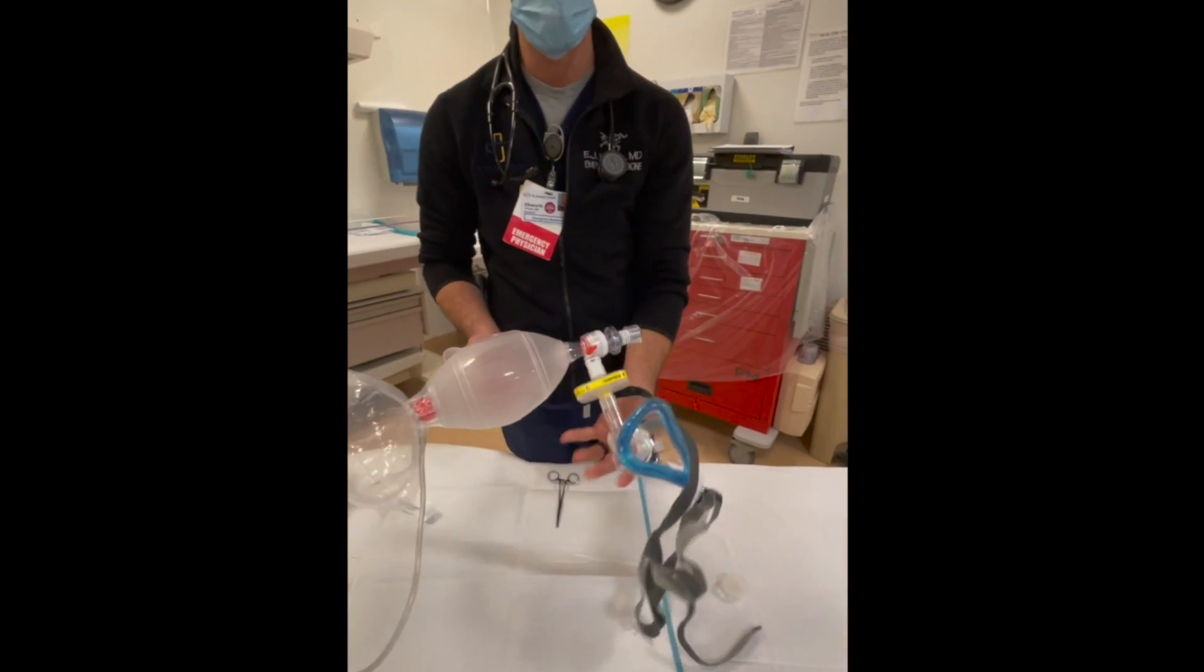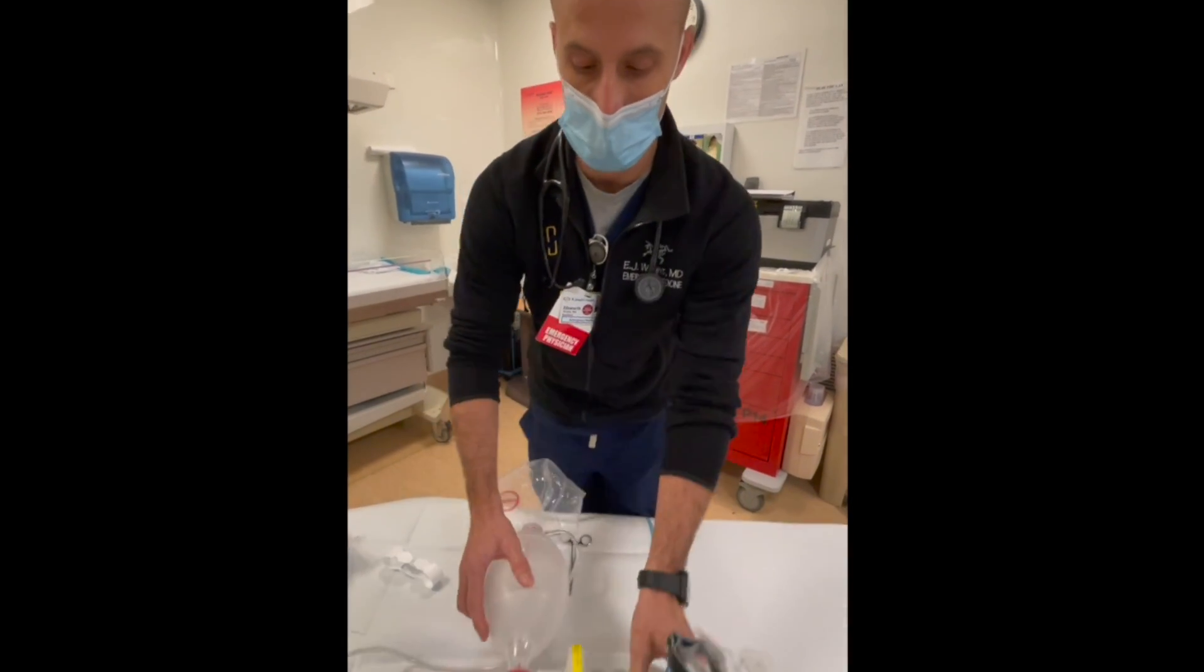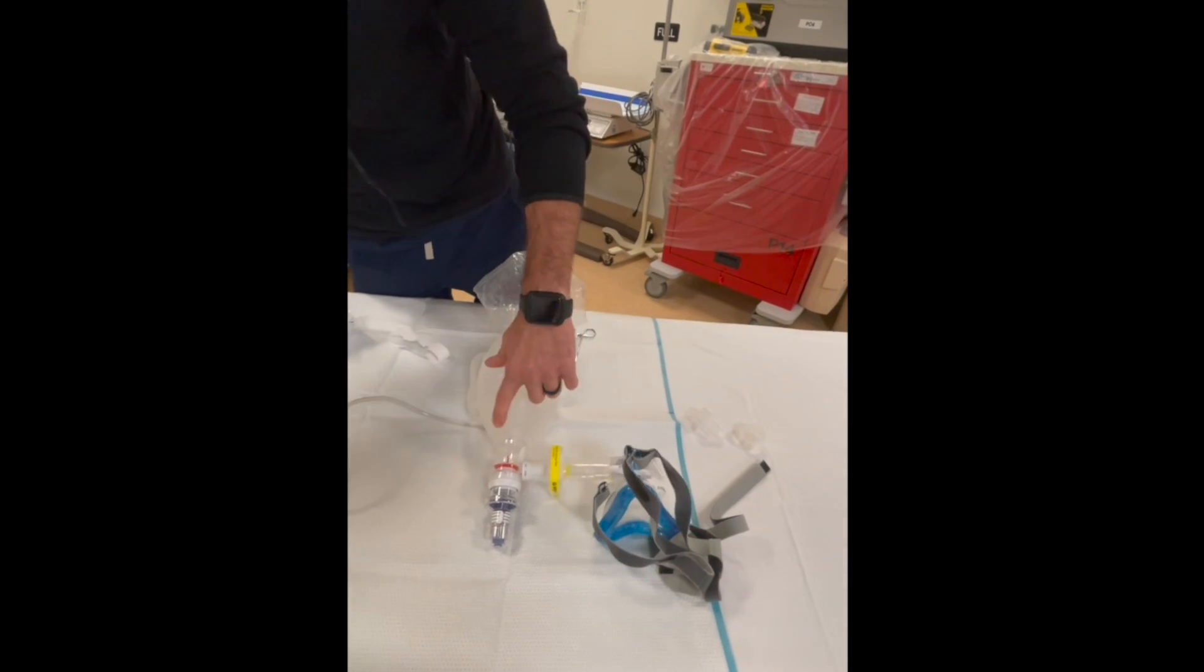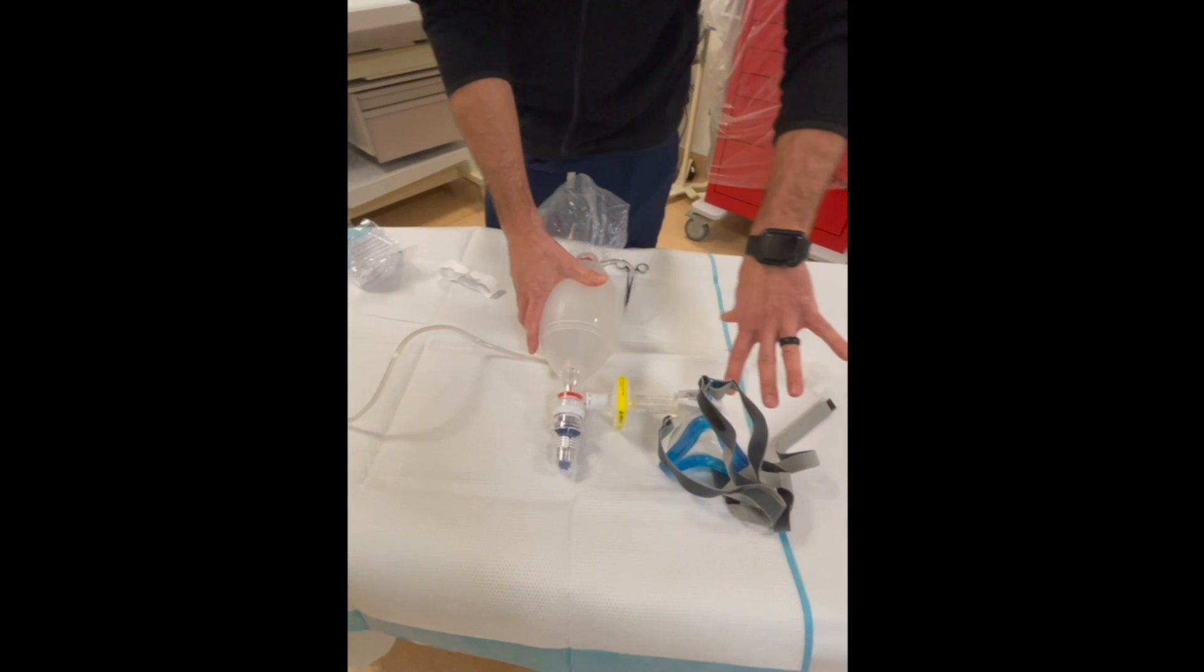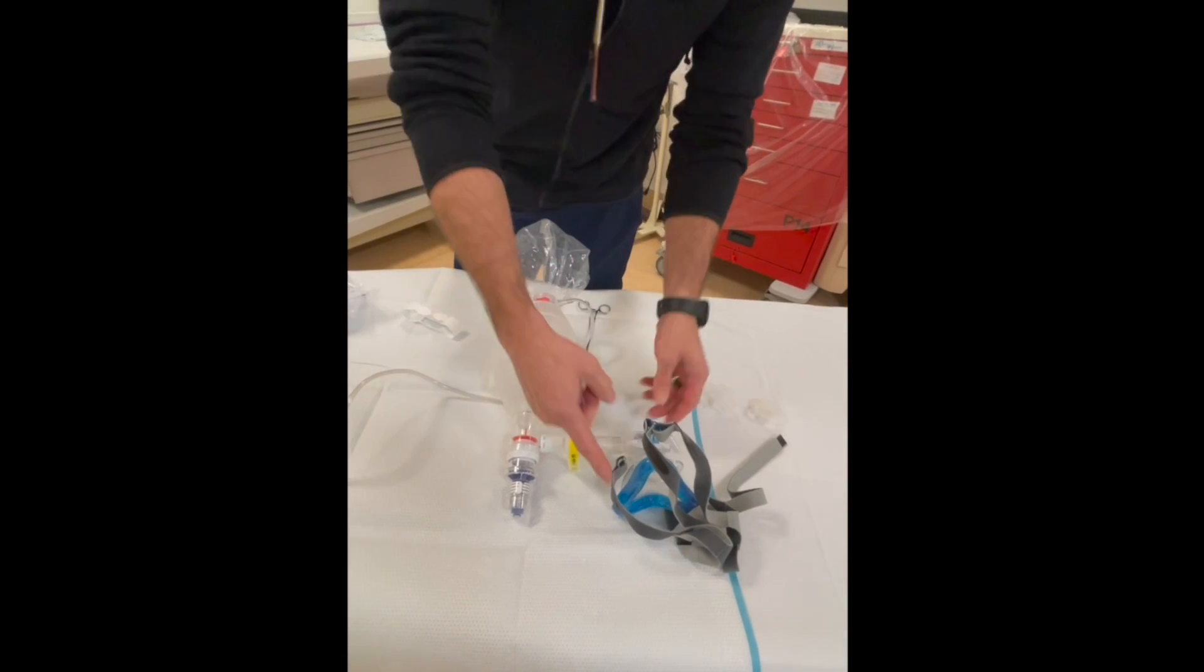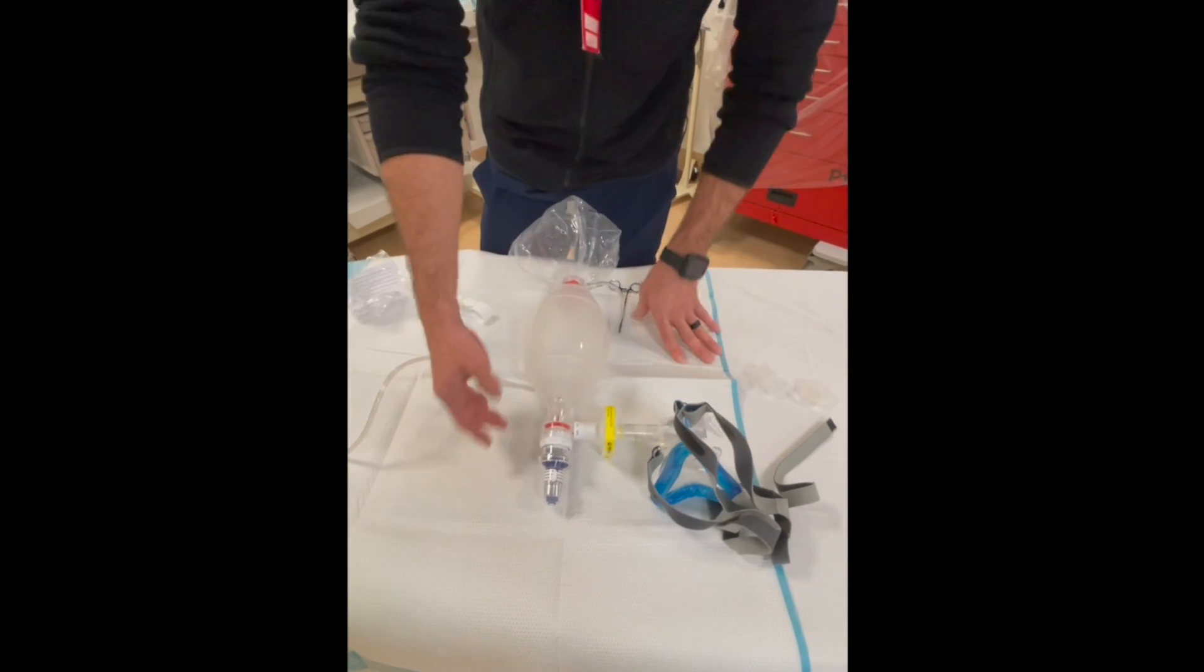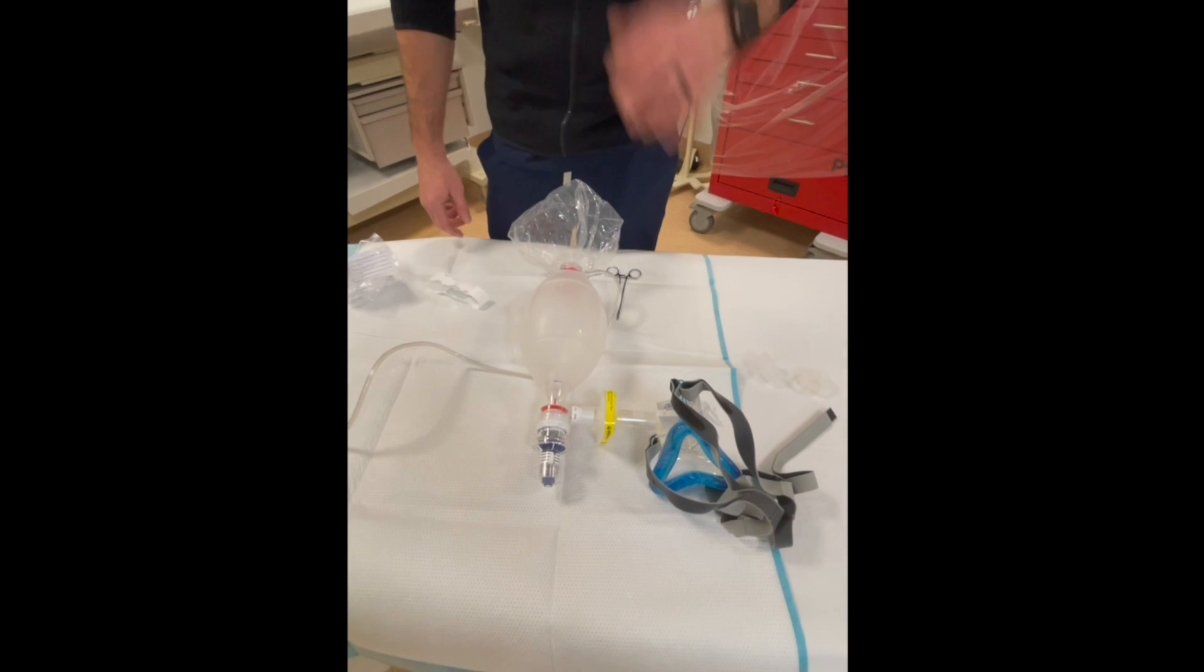When the patient breathes, they are going to inhale the oxygen which is coming in through our reservoir, which is going to provide our increased mean airway pressure. When they exhale, they're going to exhale through this tube and it's going to go out the PEEP valve. This is how they develop the actual end expiratory pressure, and again this is going to be adjustable.